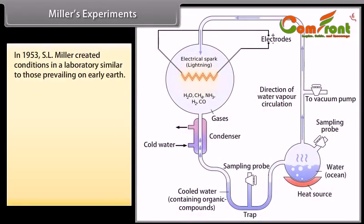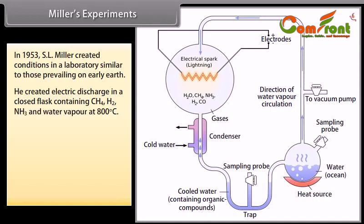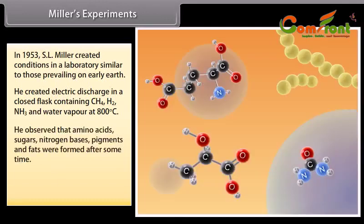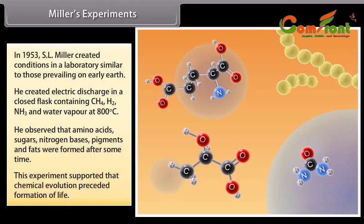Miller's Experiment. In 1953, S.L. Miller created conditions in a laboratory similar to those prevailing on early Earth. He created electric discharge in a closed flask containing CH4, H2, NH3 and water vapor at 800 degrees Celsius. He observed that amino acids, sugars, nitrogen bases, pigments and fats were formed after some time. This experiment supported the idea that chemical evolution preceded the formation of life.